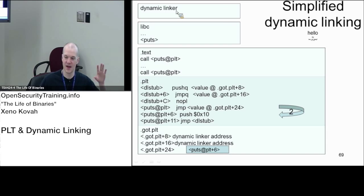Jump to DL stub and we jump back to here, and so it's going to push a value of the PLT plus eight and then it's going to jump to whatever value is here.